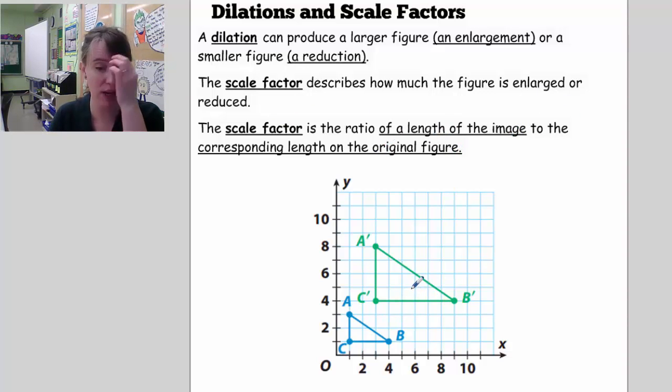So, for instance, if we had to find the scale factor, first of all, let's identify the pre-image. The pre-image is ABCD. So here, just take one side length. It's easier for us to count a side length that's either vertical or horizontal. It's harder for us to count a side length that's created with a diagonal line.